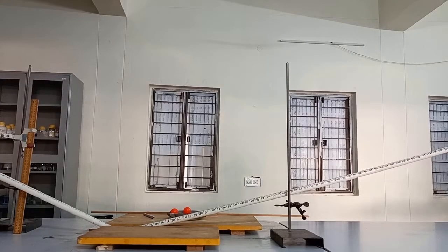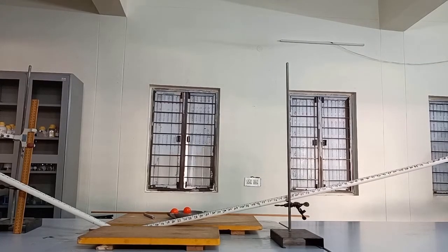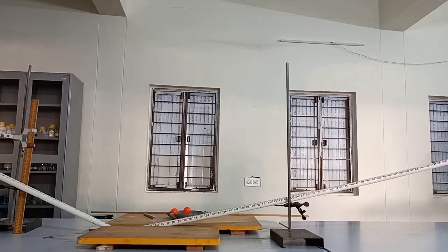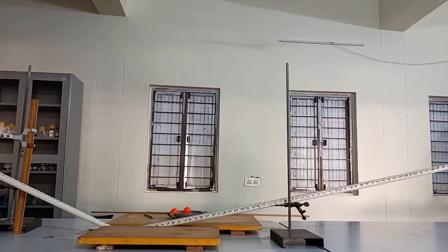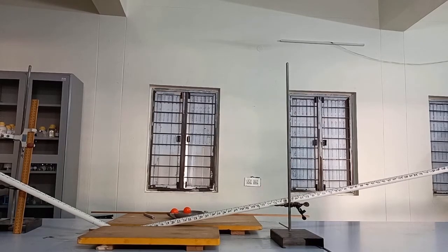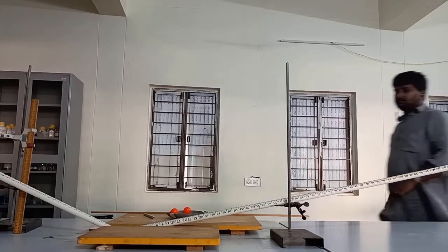Galileo used smoother planes, but here we have a rough plane. There will be frictional force acting on the ball, so it cannot reach the same height as it was dropped from on the first inclined plane.